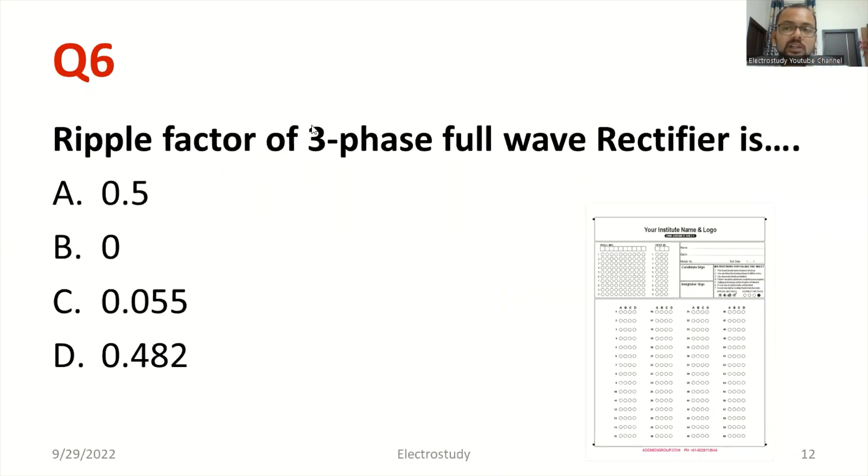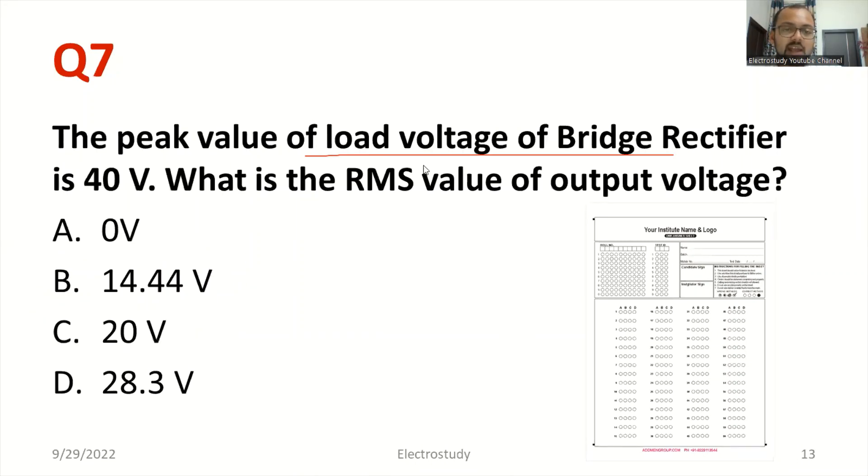Please recall the table which I already mentioned. Ripple factor of three-phase full-wave rectifier. A typical question: a three-phase full rectifier, what is the value of RF ripple factor? Obviously, the right answer is 0.055. Please make a note of this. Very important.